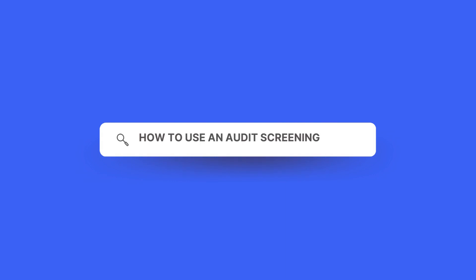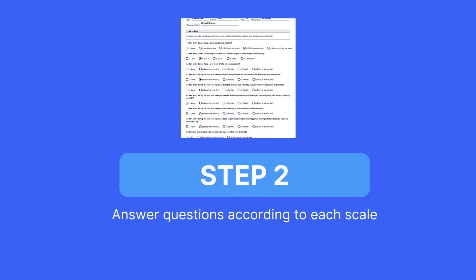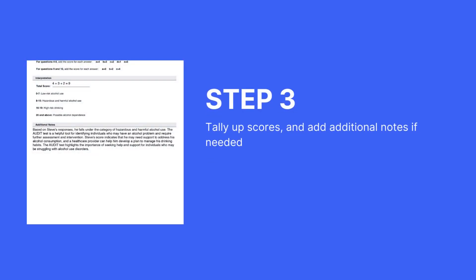How to use an audit screening tool. The first step is to fill out all the essential patient information at the top of the page. You will then need to answer the questions according to each scale. Tally up the scores and then add additional notes once complete.